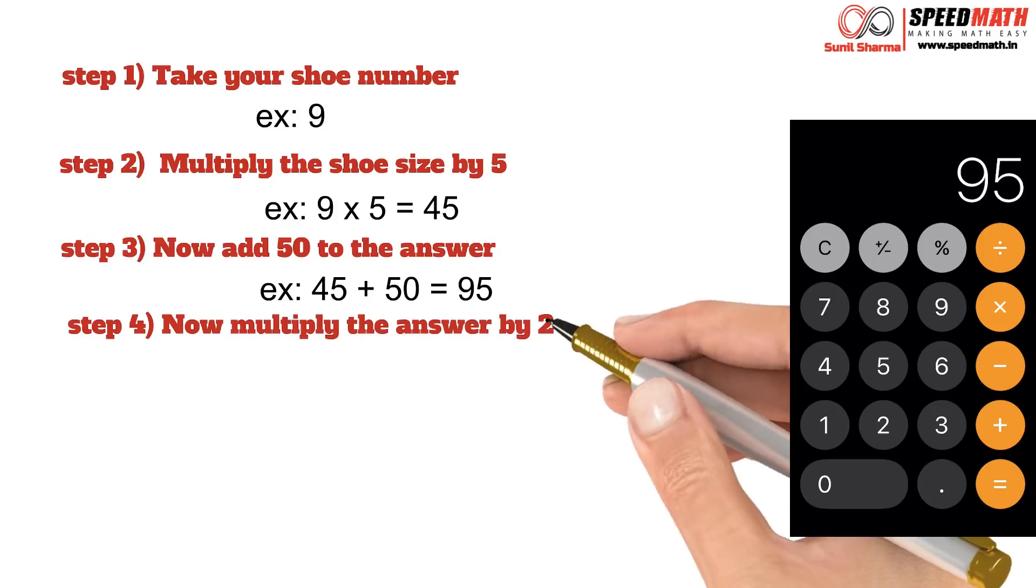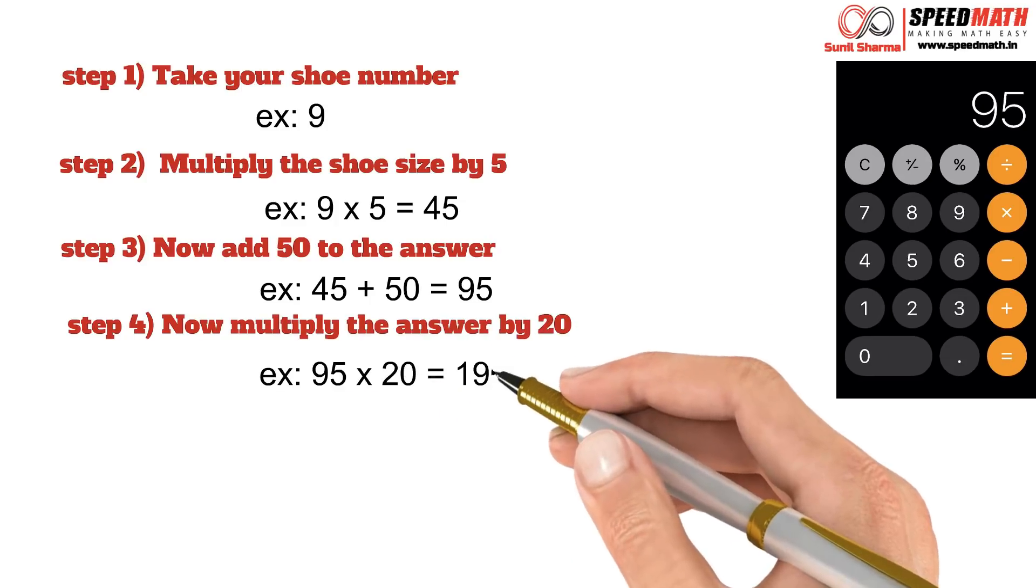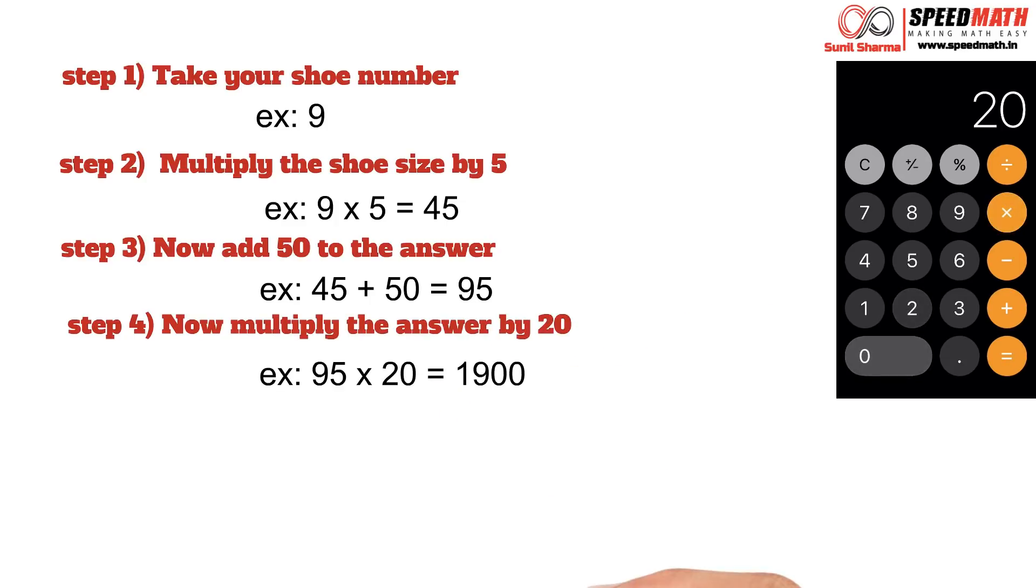Step 4: now multiply the answer in the calculator by 20. In my example it's 95, so I'll multiply 95 to 20, that's 1900. So if you're done with fourth step, let's go to the next step.